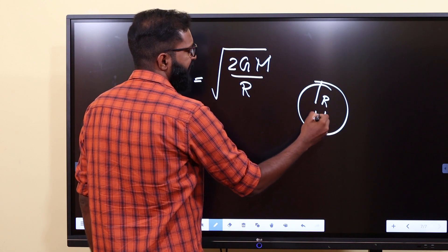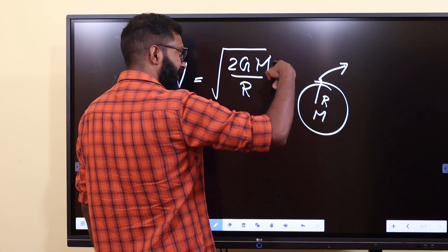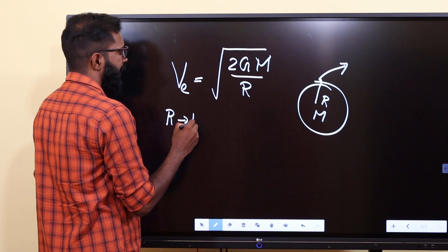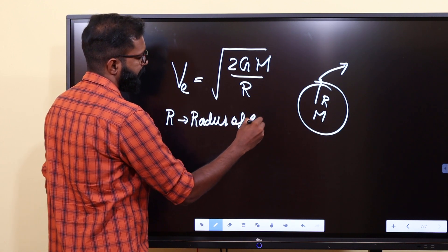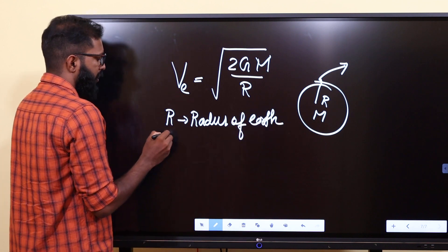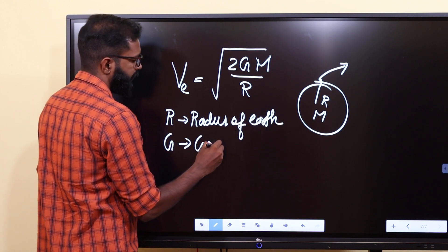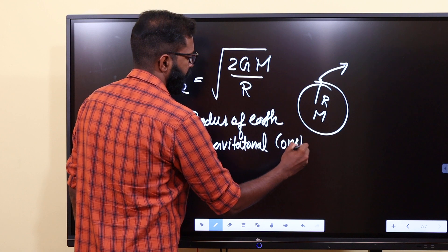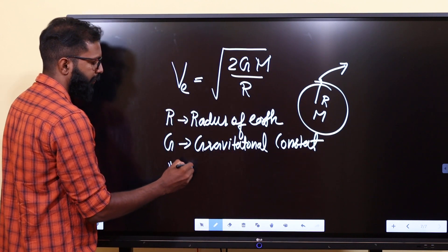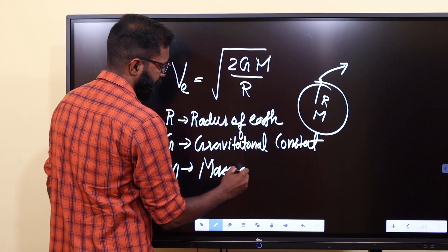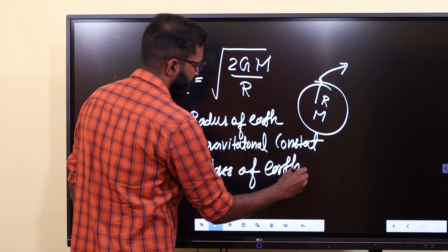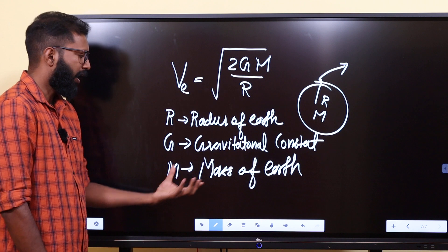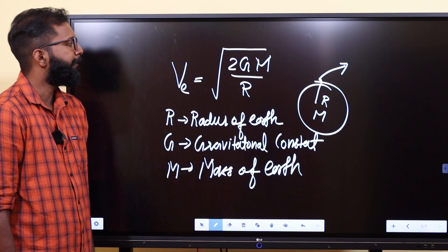VE = √(2GM/R), where capital M is the mass of Earth, R is the radius of Earth, and G is the gravitational constant.